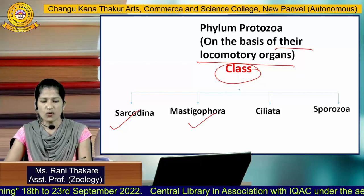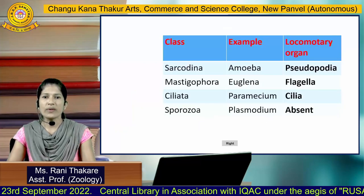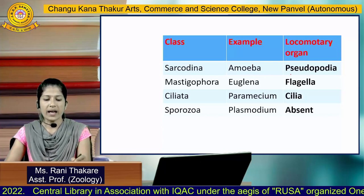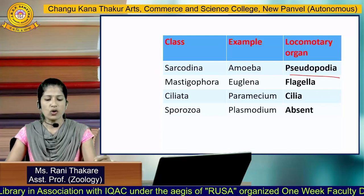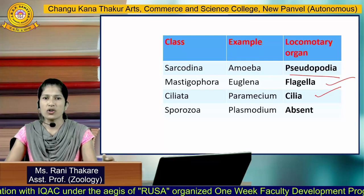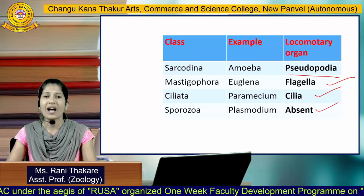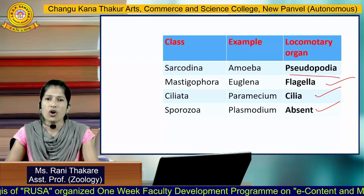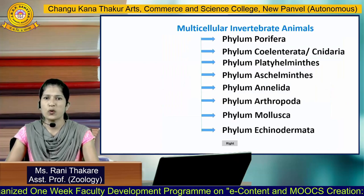The four classes are: class Sarcodina, class Mastigophora, class Ciliata, and class Sporozoa. Animals placed in class Sarcodina have pseudopodia as locomotory organs. Mastigophora have flagella, and Ciliata have cilia. Sporozoans do not have any locomotory organs — locomotory organs are absent in class Sporozoa.